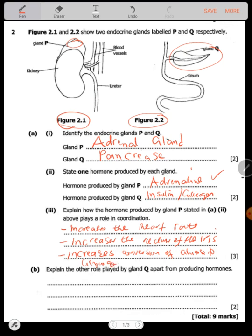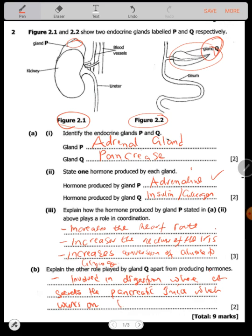Explain the other role played by Q. You know that Q is the pancreas. Apart from producing hormones, the pancreas is also involved in digestion, where it secretes pancreatic juice which works on lipids.